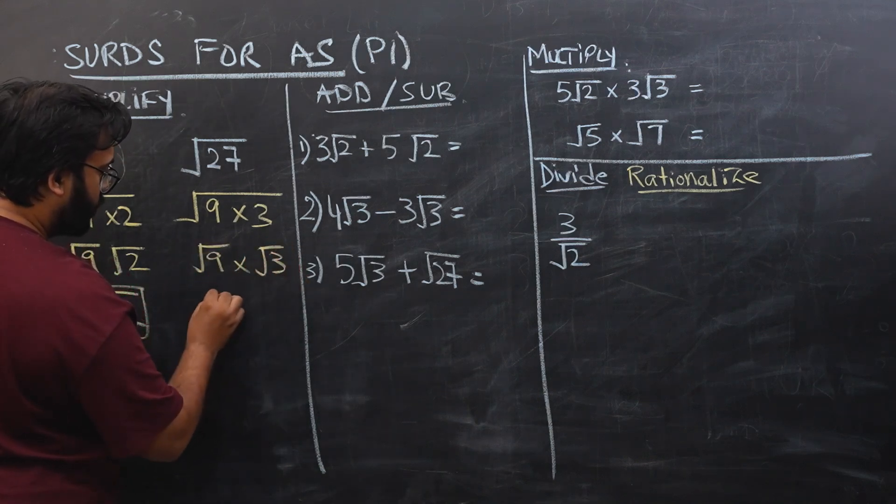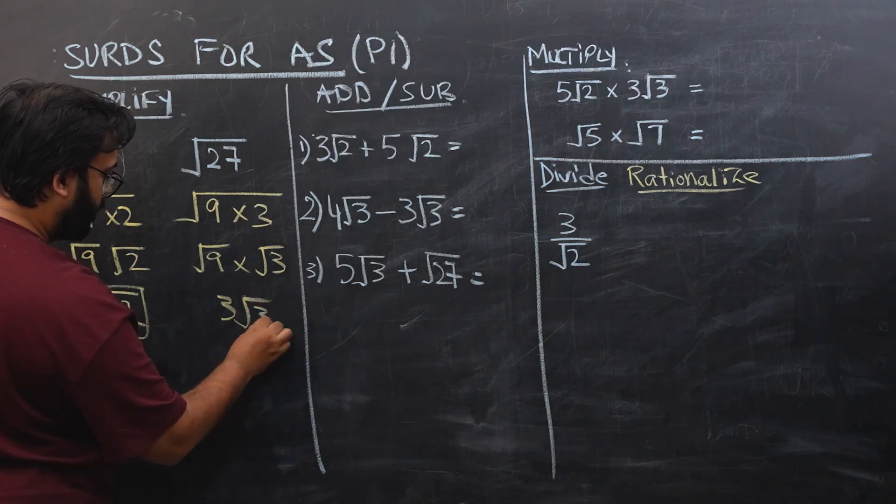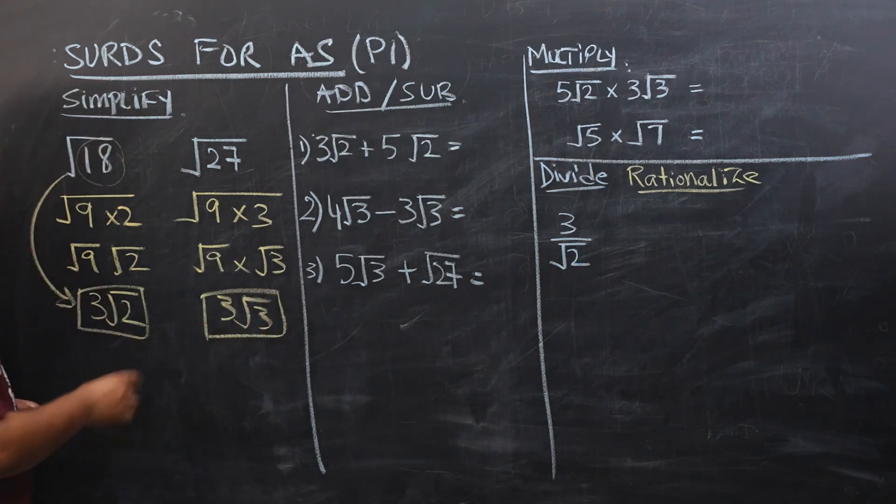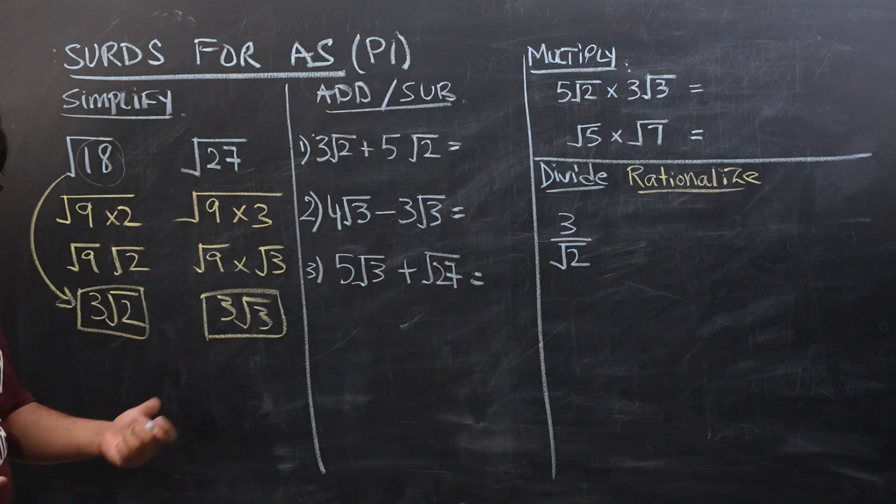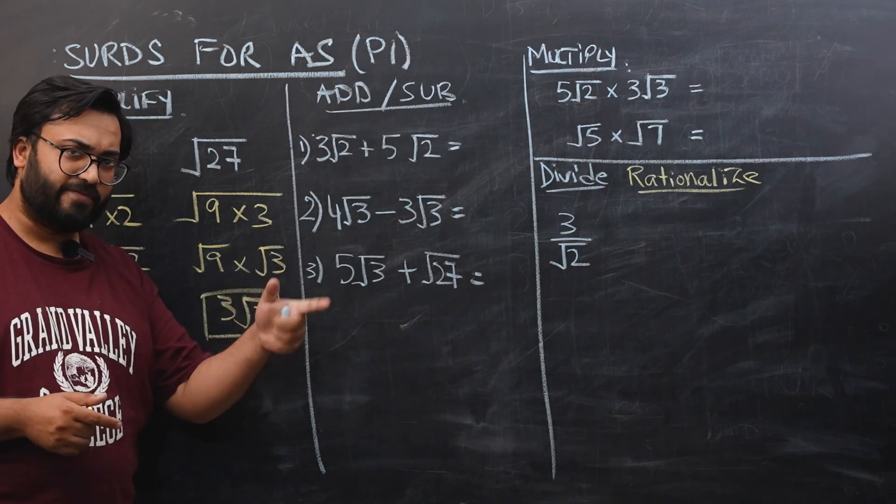So that would be 3 square root of 3. That is again the simplified form. It's very easy practice. You don't have to think much. You have calculators. If you're confused, you can keep on dividing them with bigger square numbers till you find the biggest square factor.